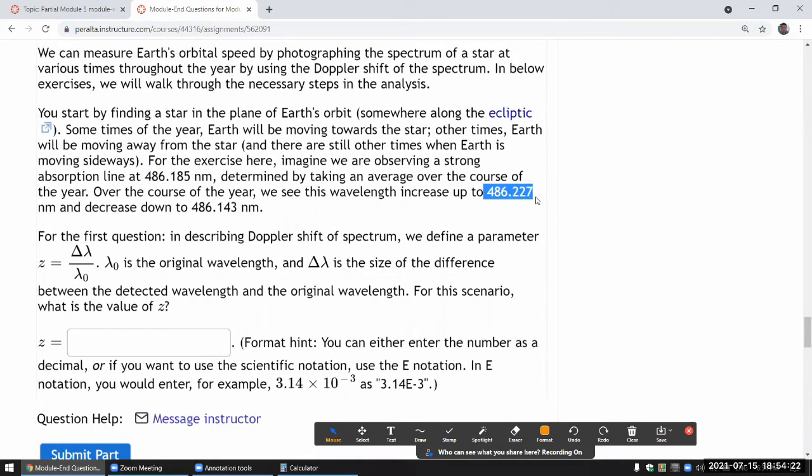At some times we see the wavelength longer. At some times we see the wavelength shorter. And one will be the red shift, the other will be the blue shift. And so for the first question, it's giving us this parameter, which is defined in terms of wavelengths. It's asking what is the value of z?